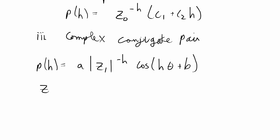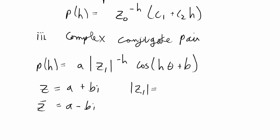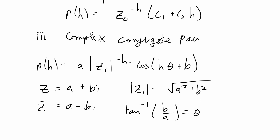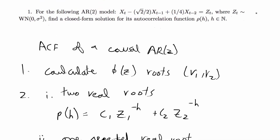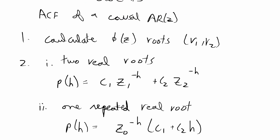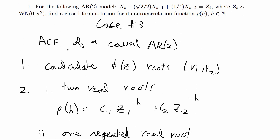For case three, your roots are a complex number a+bi and its conjugate a−bi. The real part is a, the imaginary part is b, and the magnitude |z1| equals the square root of a² + b². Theta is found by tan inverse of b over a. This example is case three, so the roots will be an imaginary conjugate pair.